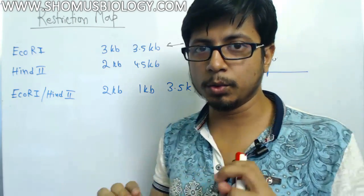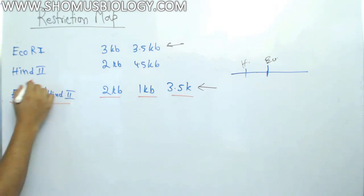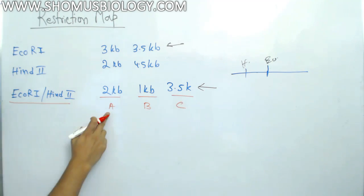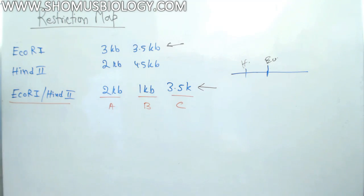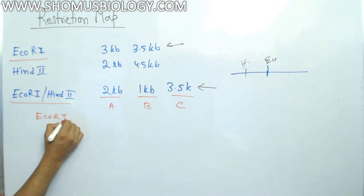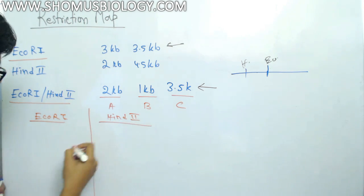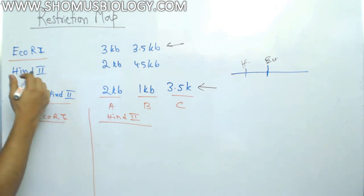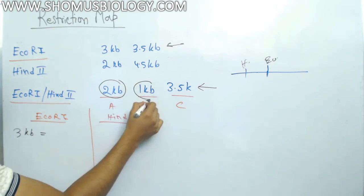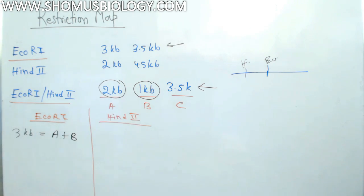The rule is to label all the fragments you get from the double-enzyme cut. So let's say this is A (2 kb), this is B (1 kb), and this is C (3.5 kb). Now for EcoR1: the 3 kb fragment can be divided into A (2 kb) plus B (1 kb), totaling 3 kb. Done.